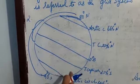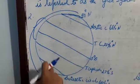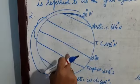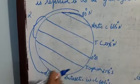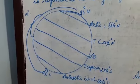The network of these parallels and meridians on a globe is called the earth grid.